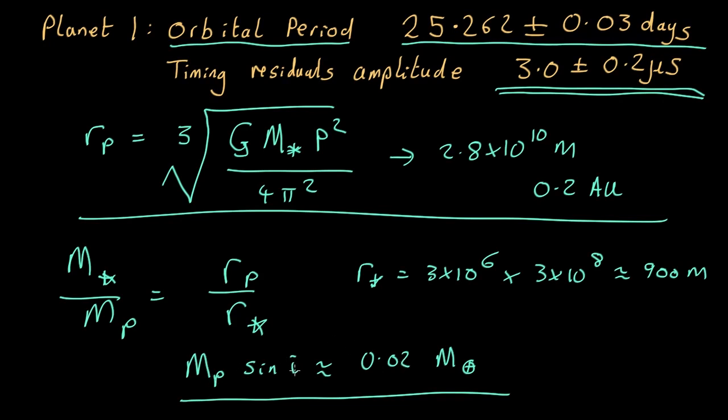If the sine inclination is larger, so it's nearer to a face-on orbit, it could be heavier than that. It could be all the way up to infinity in principle. But odds are it's a pretty small planet.